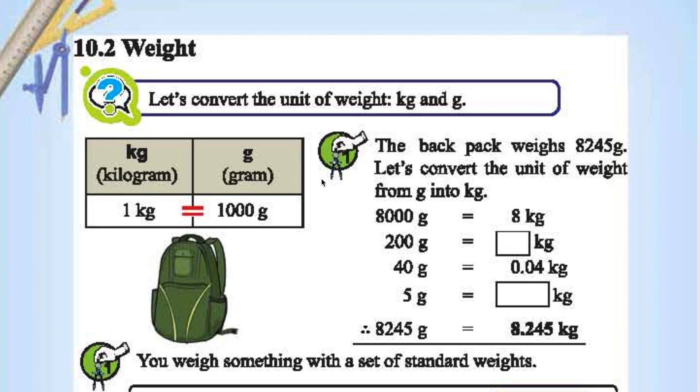Kilograms. Kilo means 1000, so 1 kg is 1000 grams. Let's convert 8245 grams to kilograms.